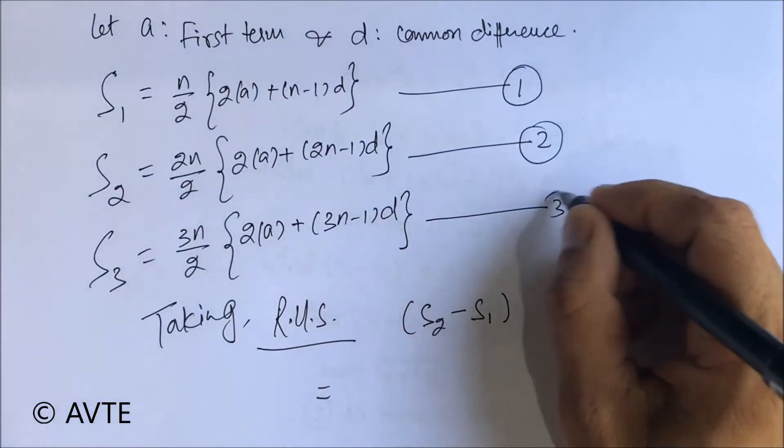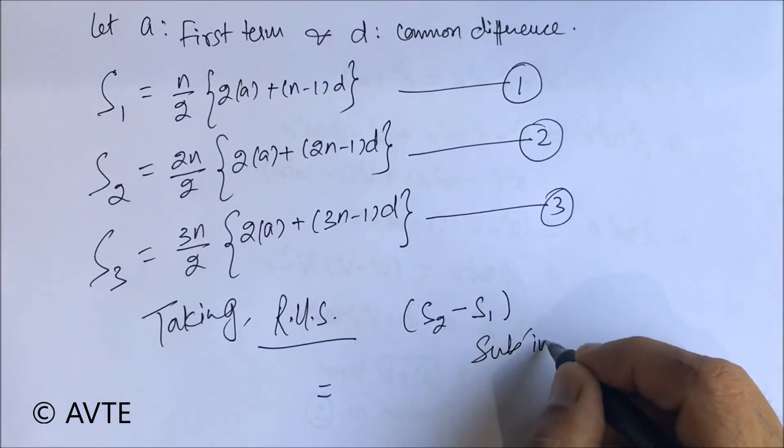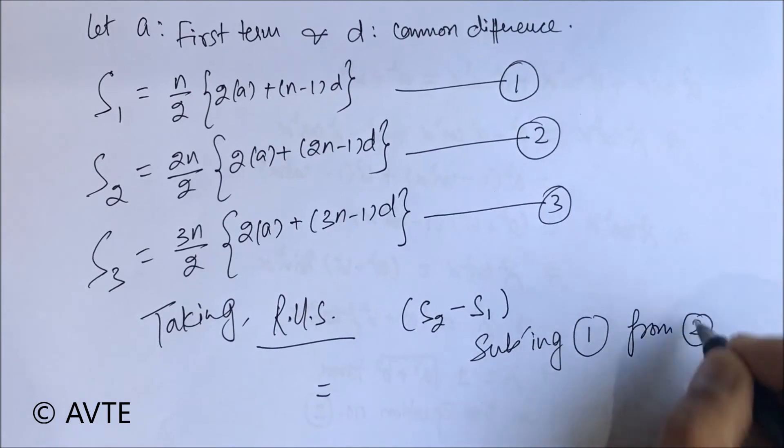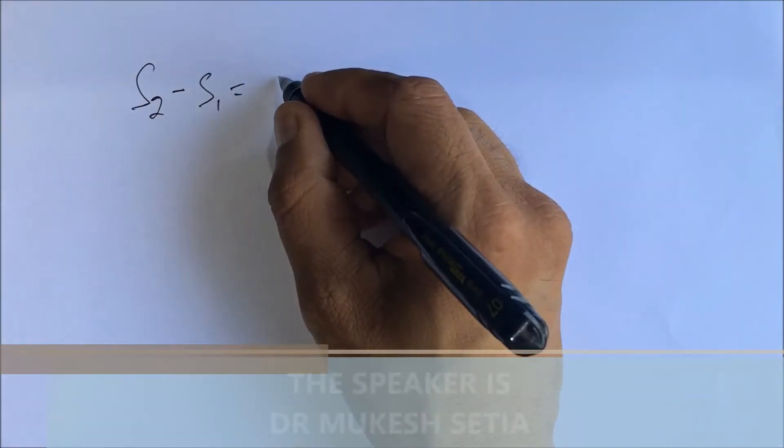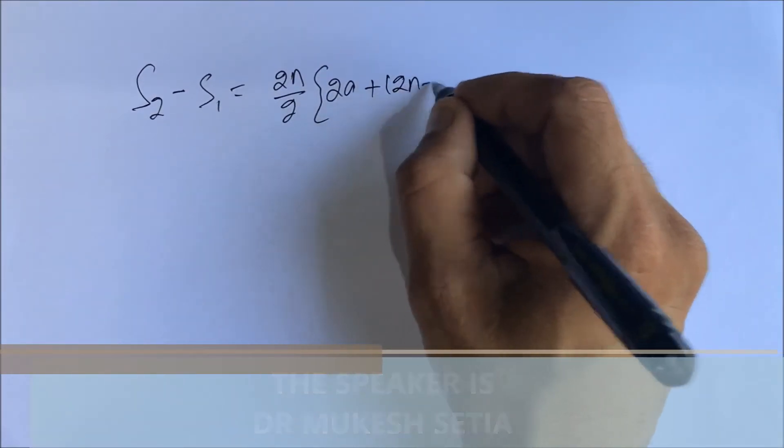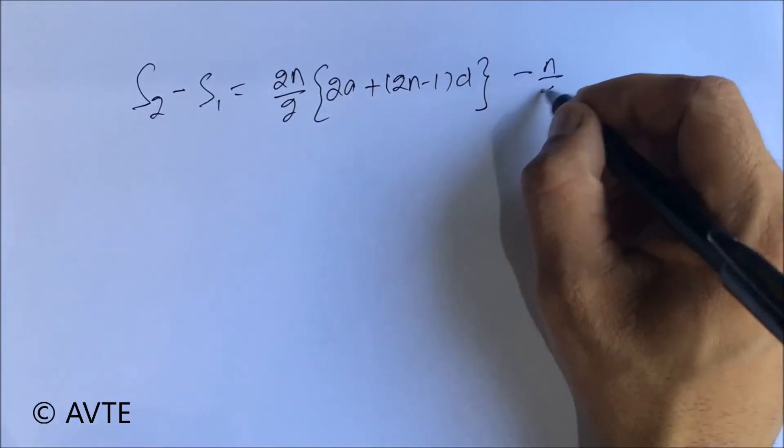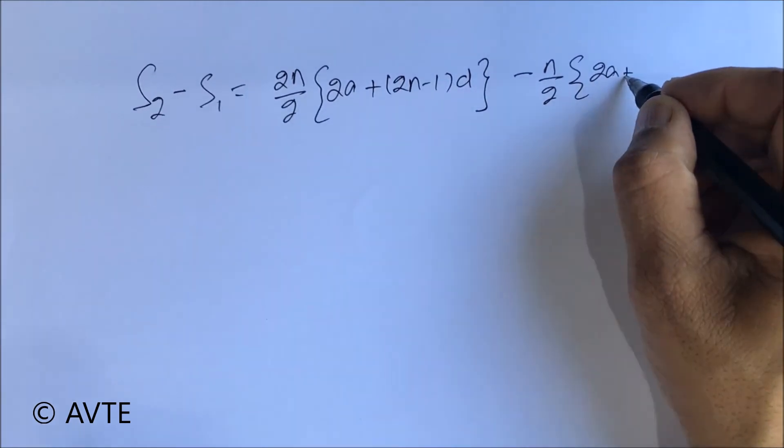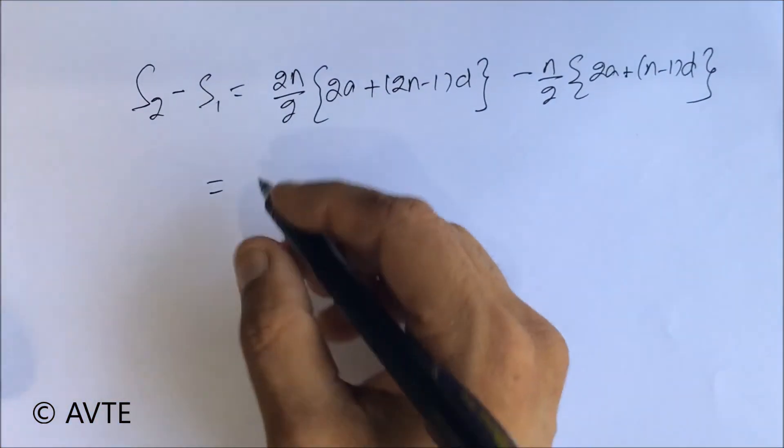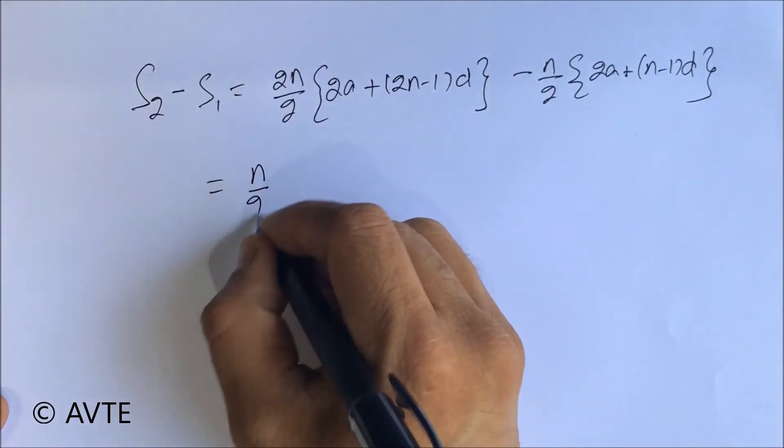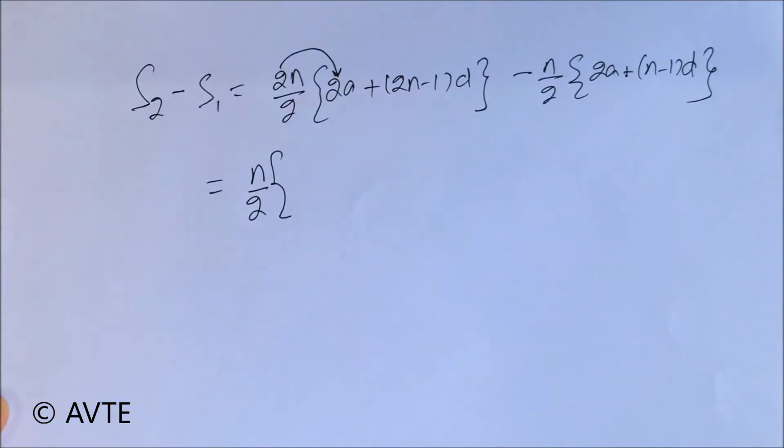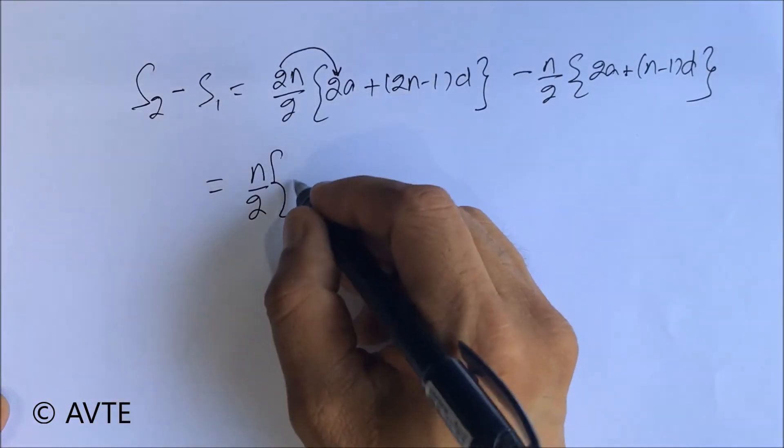Clearly we are subtracting the first equation from second. Now what we are doing, we are taking n by 2 common and we are multiplying the two which is left for the first term inside.